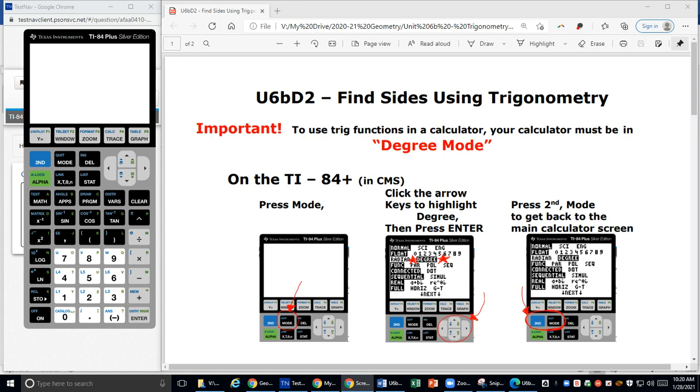Hi! Today, welcome to Unit 6B, Day 2. We're going to find sides of right triangles using the trigonometric ratios: sine, cosine, and tangent that we discussed in the last lesson.